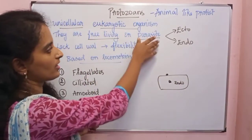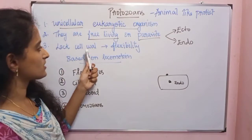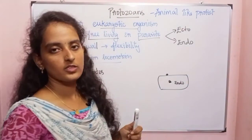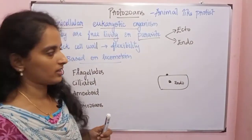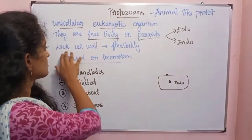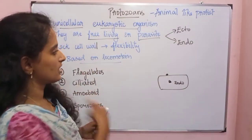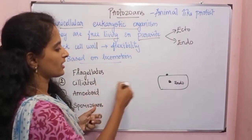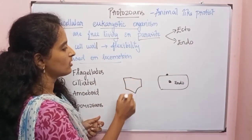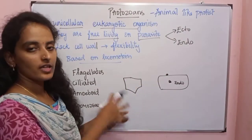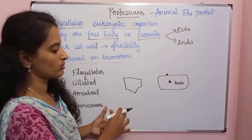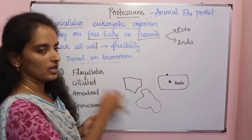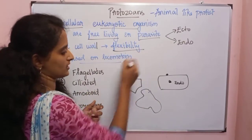Protozoans are free-living or parasitic and they lack a cell wall. Because they are animal-like proteins, they lack a cell wall, which gives them flexibility. A cell wall provides a definite shape, so without it, protozoans can change shape due to their flexibility.